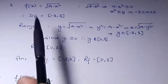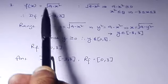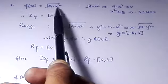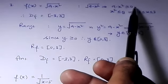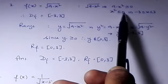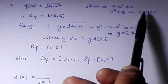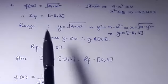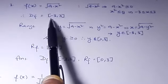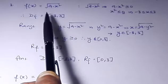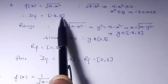Now let's see an interesting question: f(x) = √(9 - x²). For the function to be defined, 9 - x² must be greater than or equal to 0. If 9 - x² ≥ 0, that means x² ≤ 9. If x² ≤ 9, then x lies between -3 and 3. So the domain is the closed interval [-3, 3].